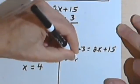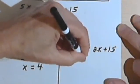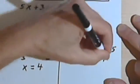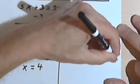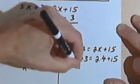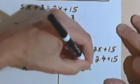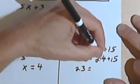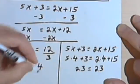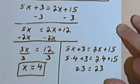So I have 5 times 4 plus 3 equals 2 times 4 plus 15. 5 times 4 is 20 plus 3 is 23. 2 times 4 is 8. 8 plus 15 is also 23. So my answer is correct.